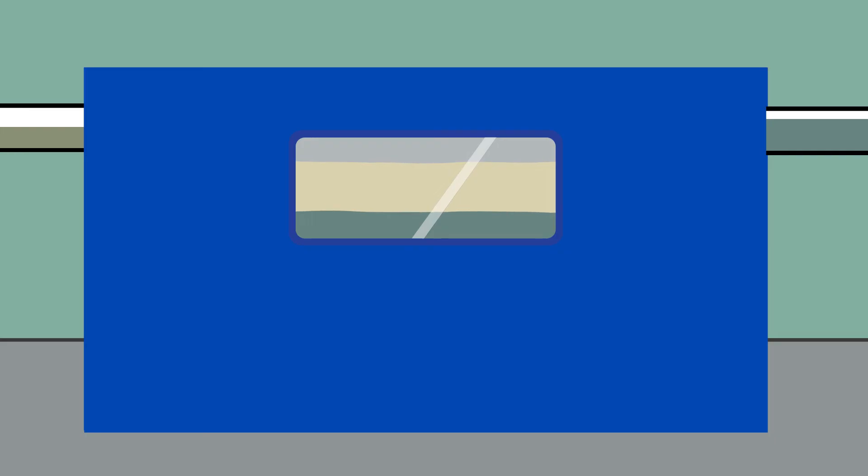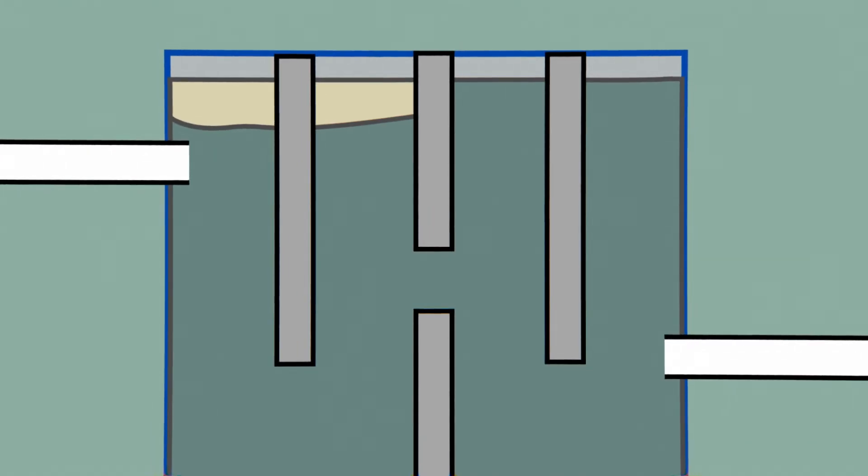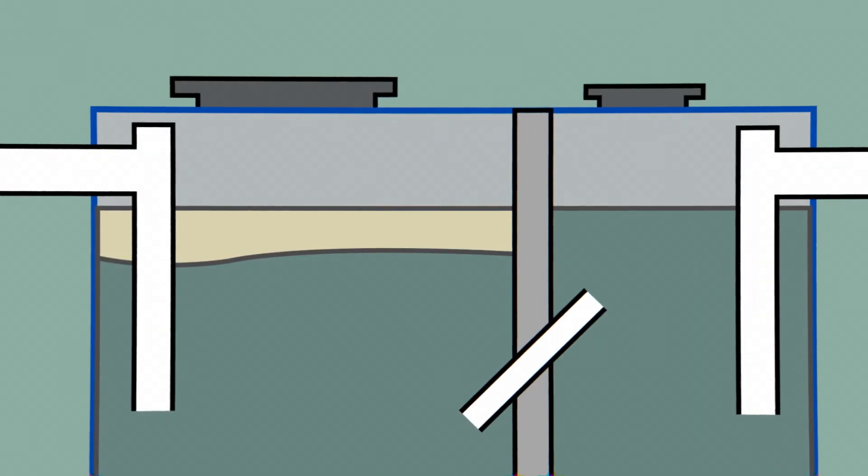Some interceptors have a viewport so that inspectors or employees can periodically check to make sure FOG is not leaving the interceptor. There are different kinds of interceptors that work in different ways.